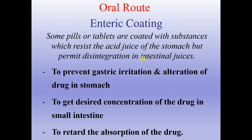Some drug forms used by oral route have a specific enteric coating. Pills or tablets are coated with substances that resist the acid juice of the stomach but permit disintegration in intestinal juices. The purposes are: to prevent gastric irritation and alteration of the drug in the stomach, to get the desired concentration of the drug in the small intestine, and to retard absorption of the drug.